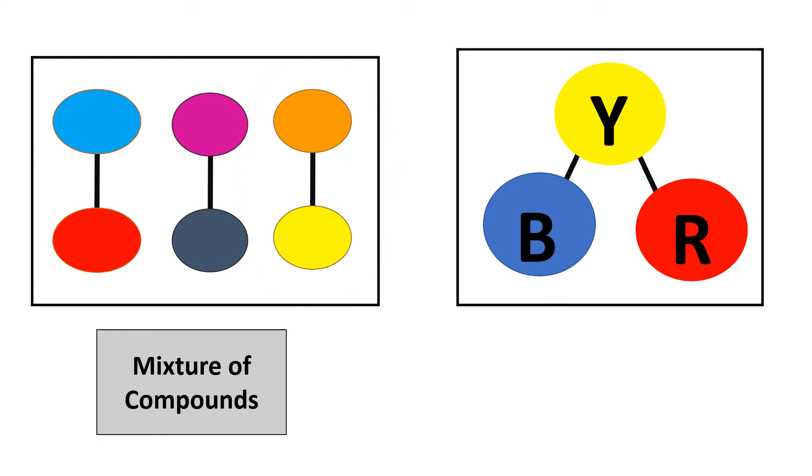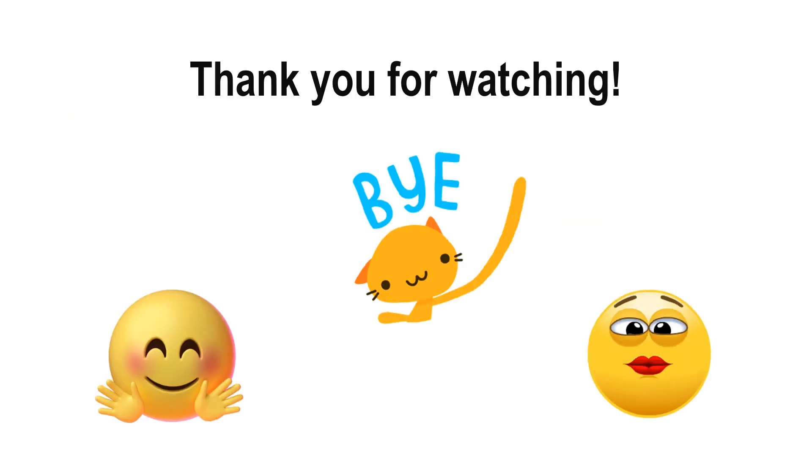And the second box is called compounds of three elements. It has elements of blue, element of yellow, and element of red.